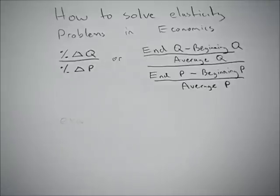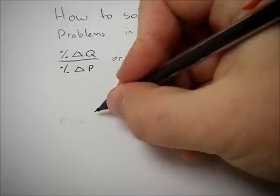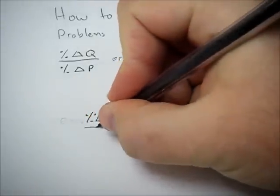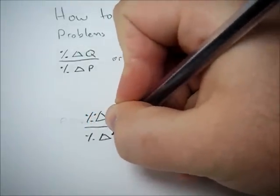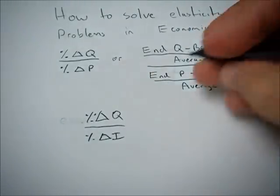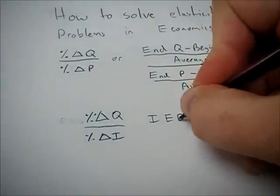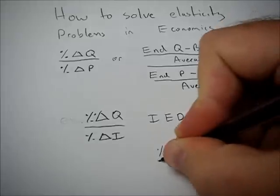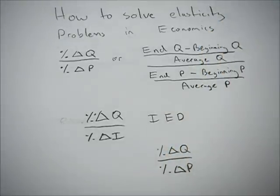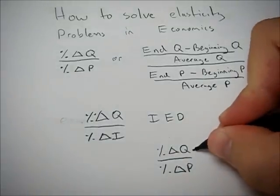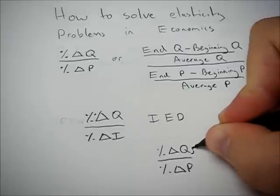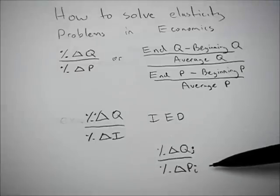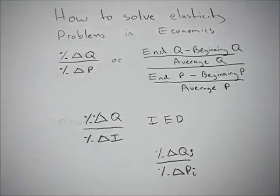If we want to look at the income elasticity of demand, we're just going to have our percent change in Q as it's affected by income — so percent change in Q over percent change in income. Our cross-price elasticity of demand is just going to be our percent change in Q over our percent change in P, but the difference here is that this quantity is for good J and the change in price is for good I. So they're different goods — maybe the quantity of hamburgers and price of hot dogs, that sort of thing.